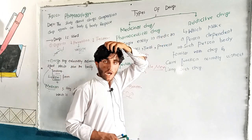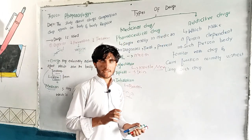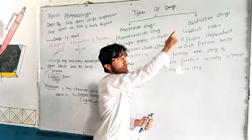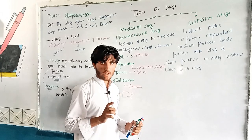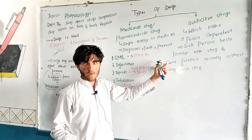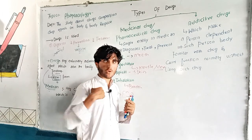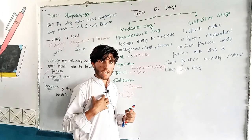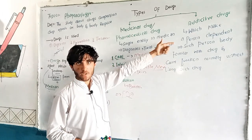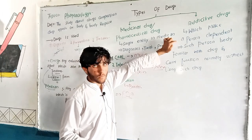Addictive drugs are drugs which make a person addicted, meaning the person becomes dependent on them. Without these drugs, they cannot perform regular or normal functions in the body.